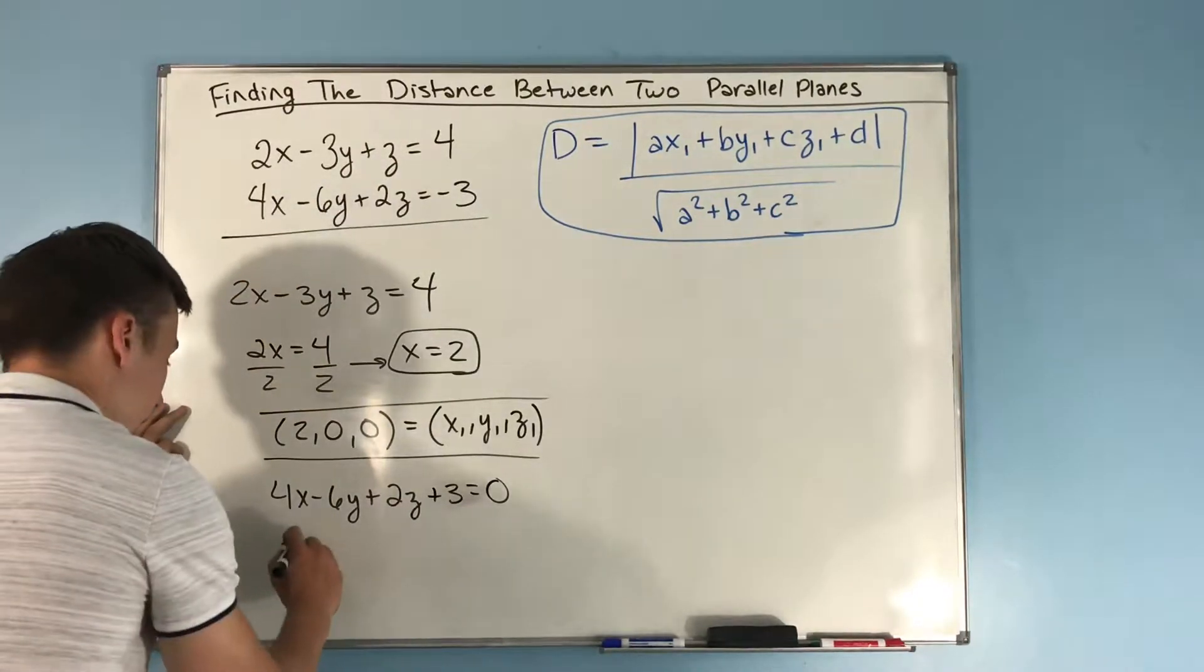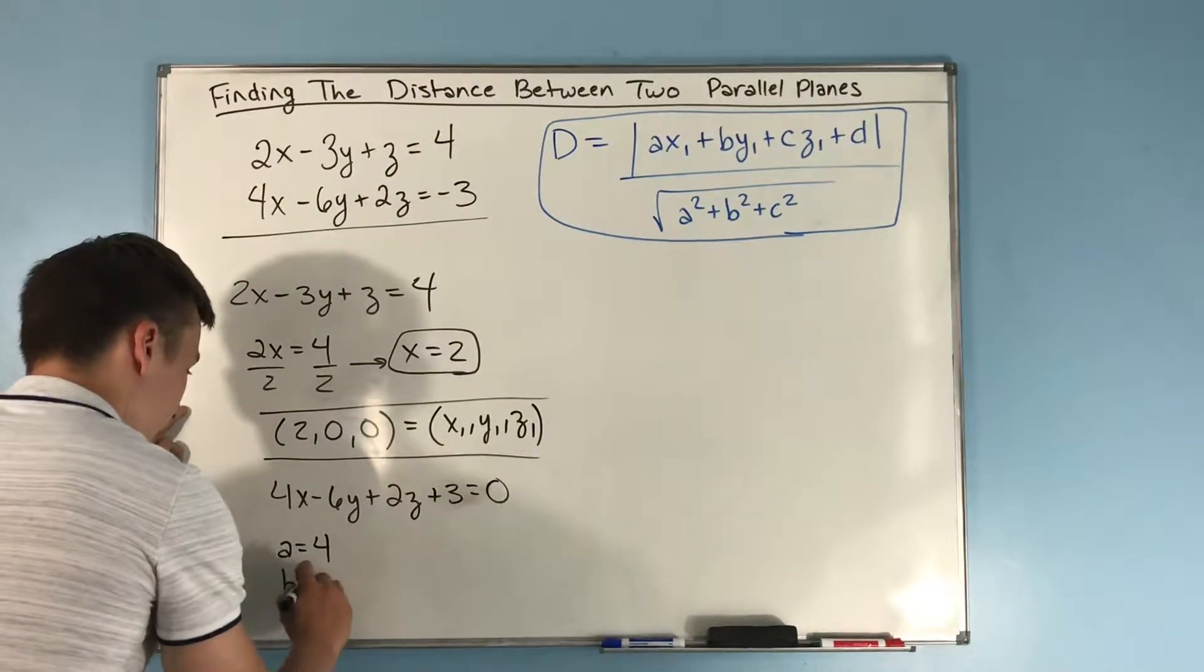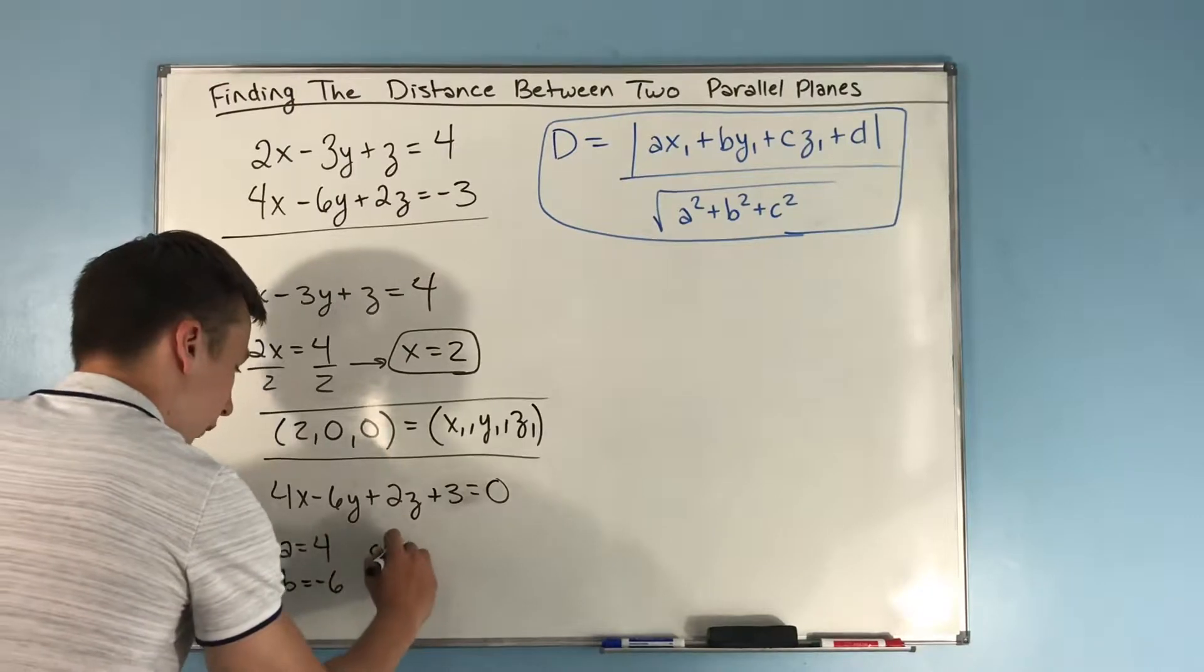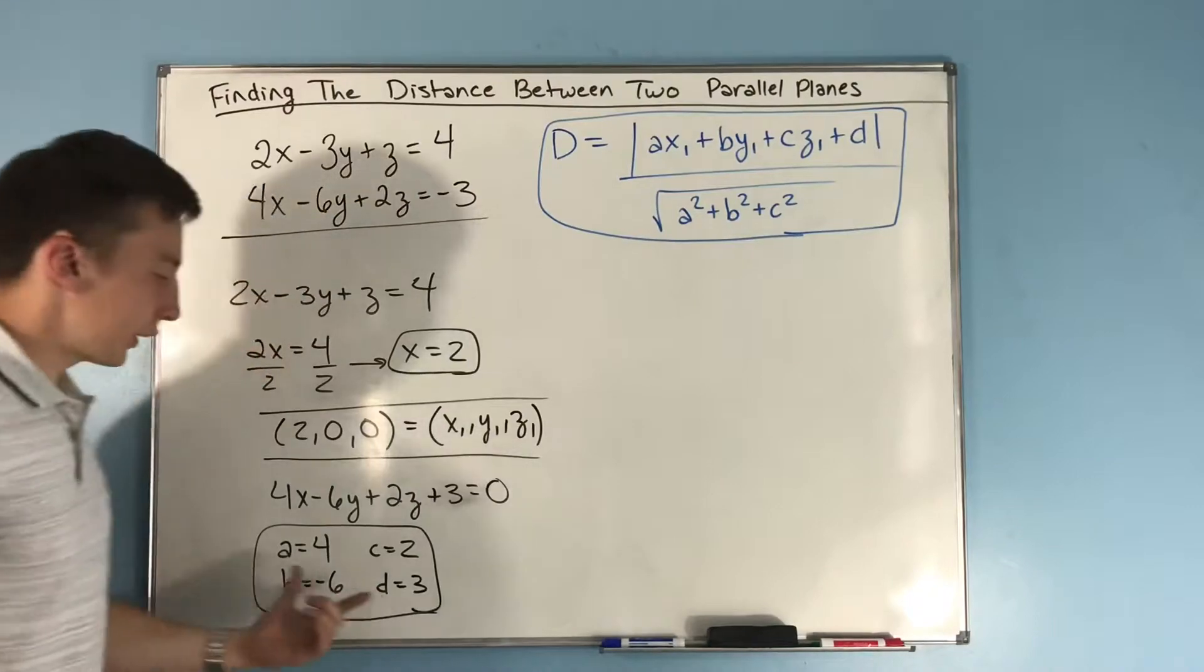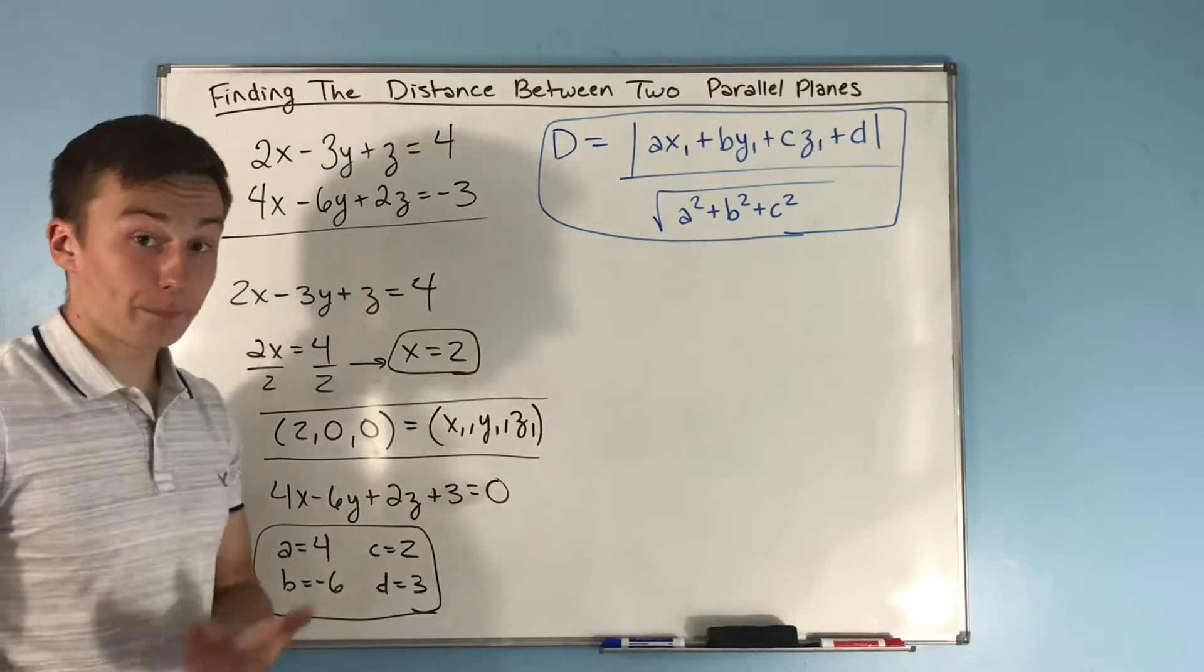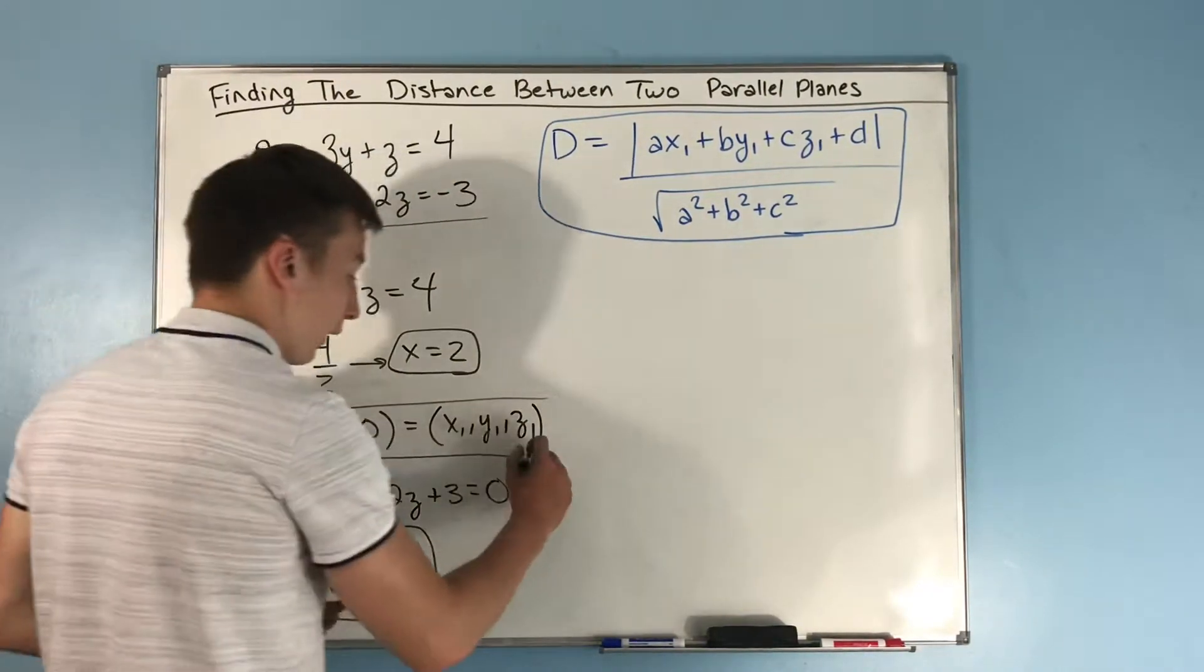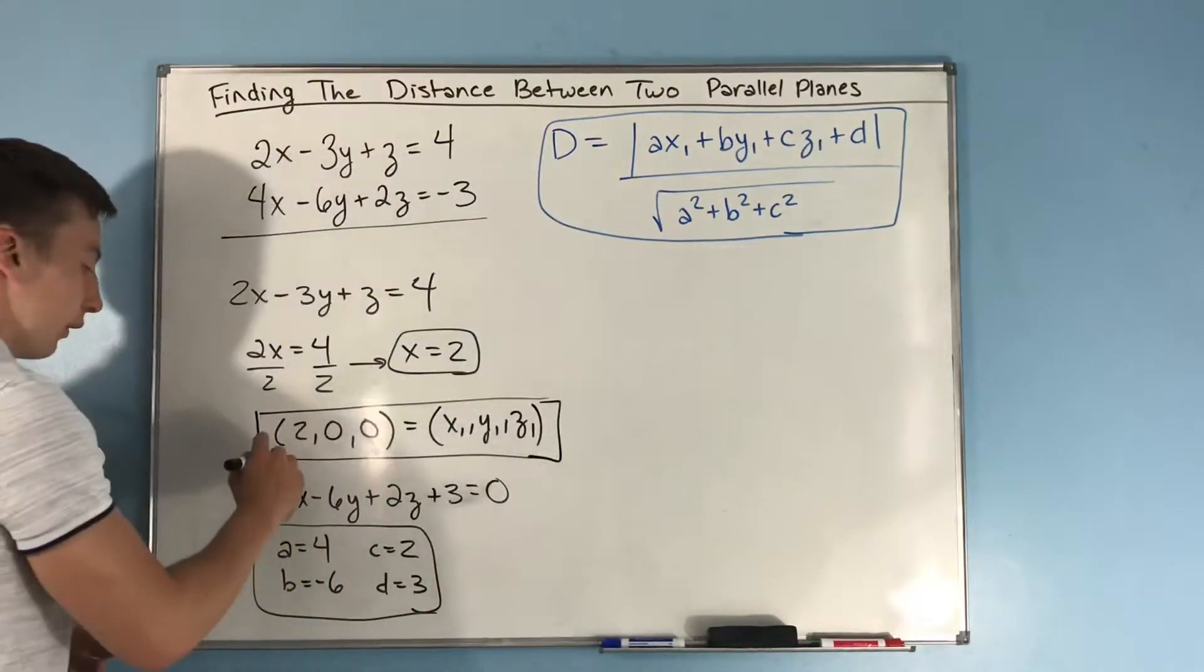So you get a = 4, b = -6, c = 2, and d = 3. That's just a linear equation for a plane. We figure out what a, b, c, and d are.